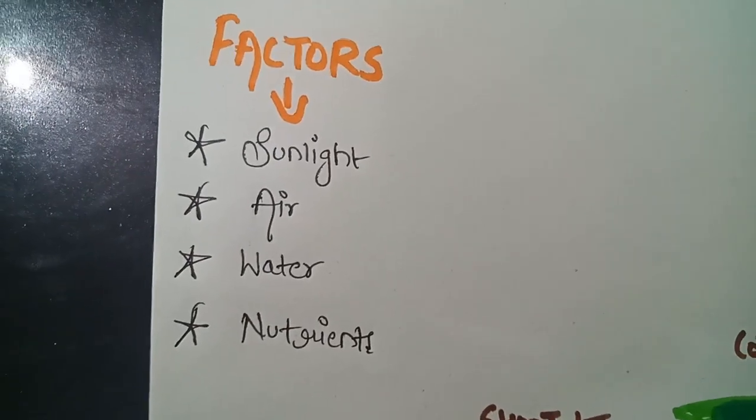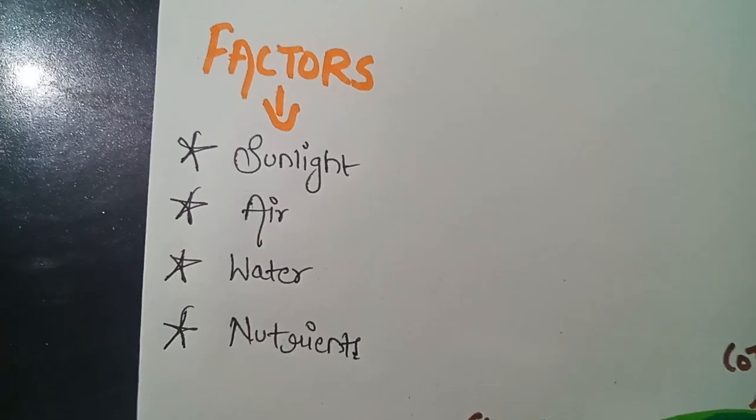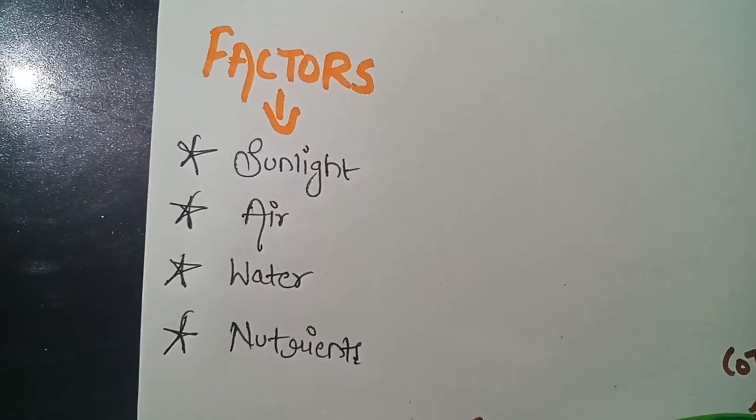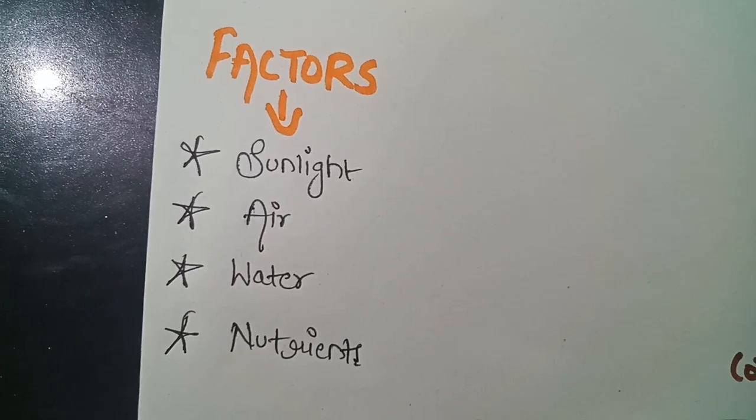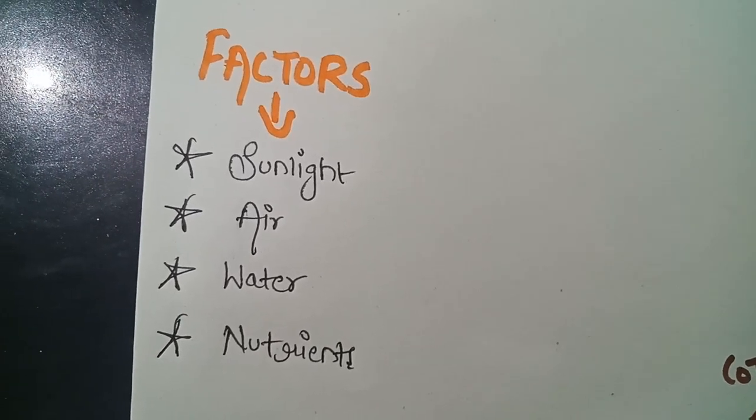Sunlight, air, water and nutrients. They are very essential for growth of a baby plant. In the absence of all this a baby plant would not be able to develop properly.